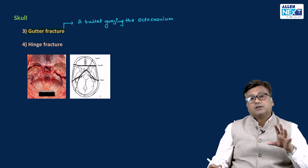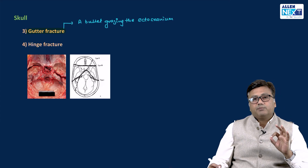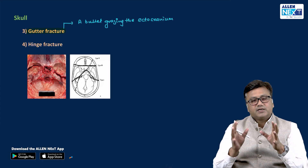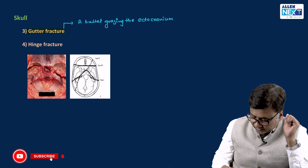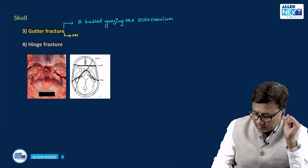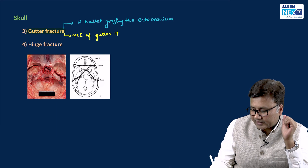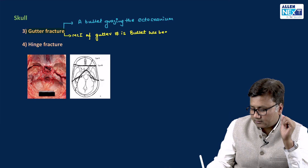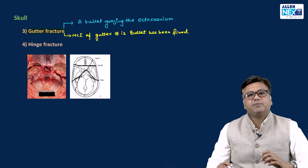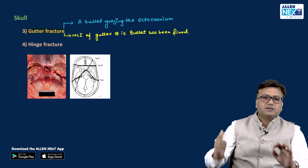The presence of a gutter fracture in the calvaria of the skull tells us that a bullet has been fired, because no other weapon has that much velocity to produce that periosteal guttering. The medico-legal importance of gutter fracture is that it tells us a bullet has been fired — it can be the result of a bullet injury only, and specifically a bullet grazing the skull.